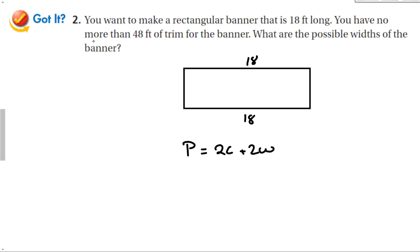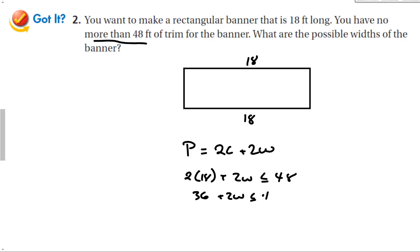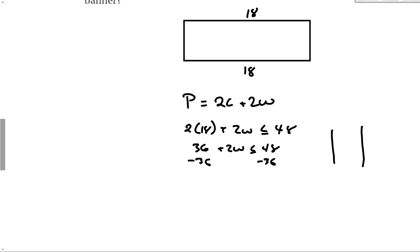We have no more than 48 feet of trim, meaning the perimeter can't exceed 48 feet. So 2 times 18 plus 2 times the width has to be less than or equal to 48. Since 2 times 18 is 36, subtracting 36 from both sides gives 2W ≤ 12. Dividing by 2 gives W ≤ 6.